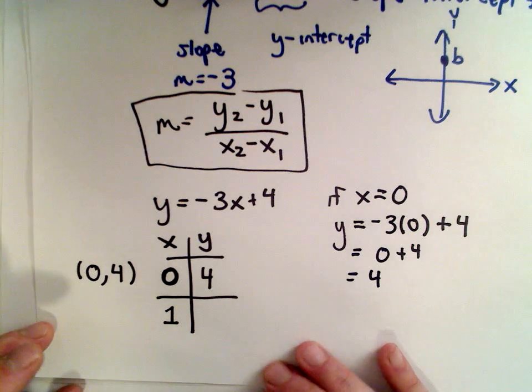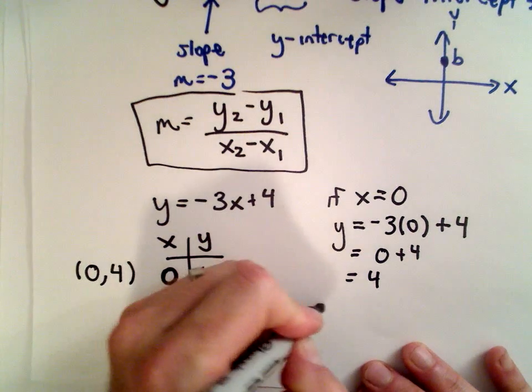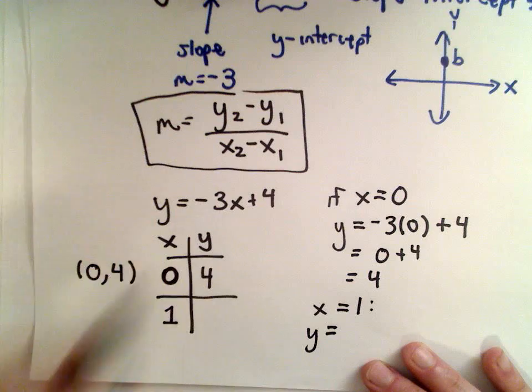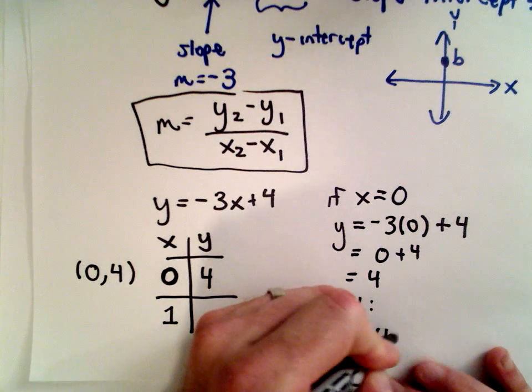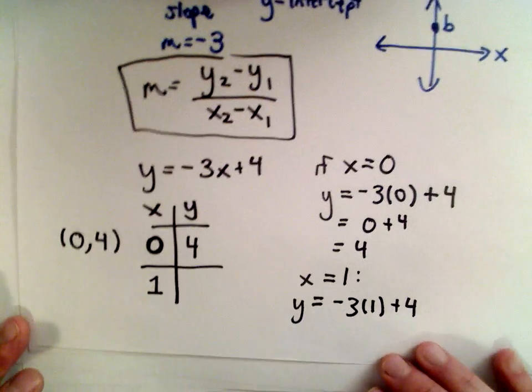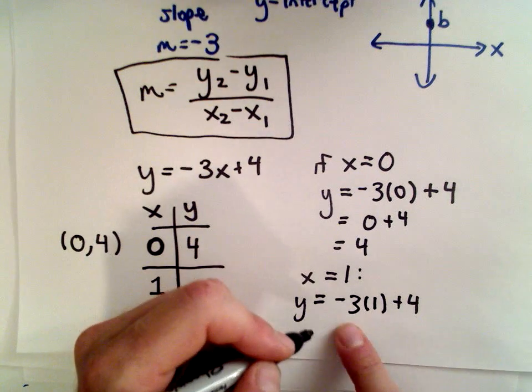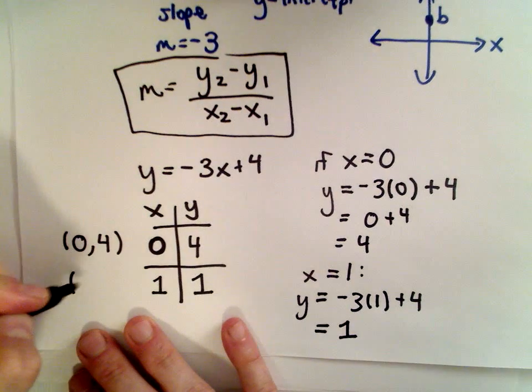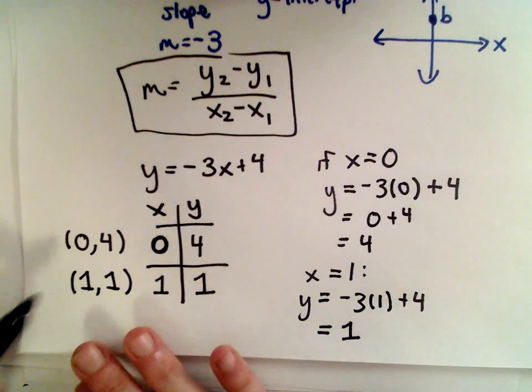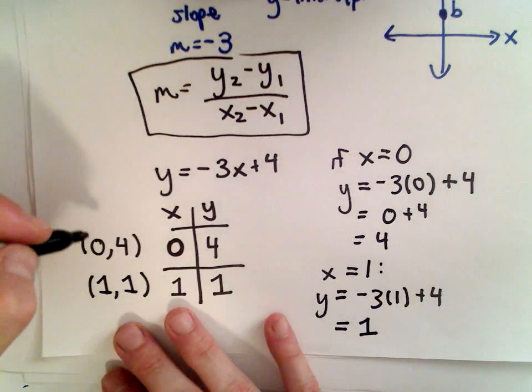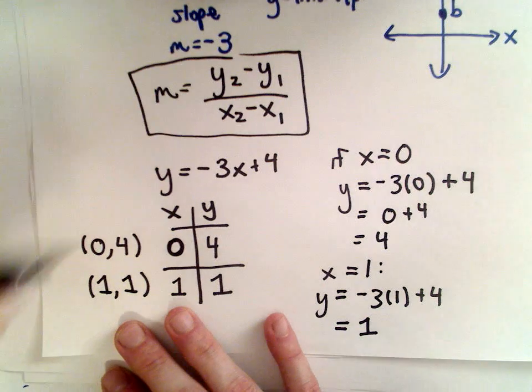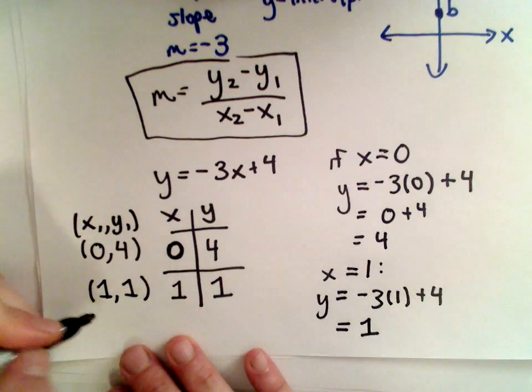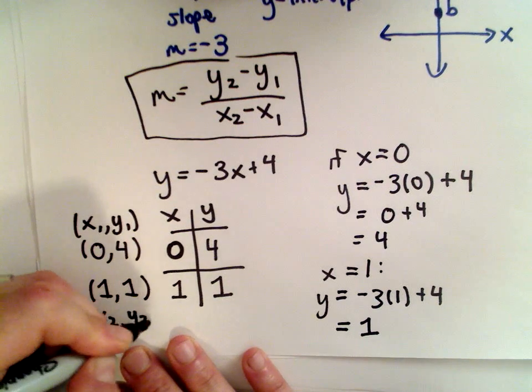Let's use another x value because we need one more. I'm going to let x equal 1 again because it'll make the arithmetic easy. So if x equals 1, we'll have y equals negative 3 multiplied by 1 plus 4. Well, negative 3 multiplied by 1 is negative 3. Negative 3 plus 4 is going to be positive 1. So there's another point on our line, 1 comma 1. Well, now I do have two points, and I can use my formula. So I'm going to make this my x1, y1, and the point 1 comma 1, that's going to be my x2, y2.